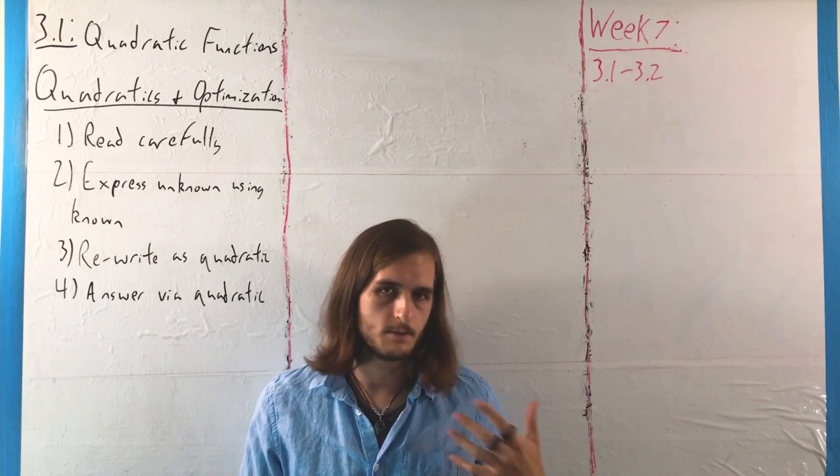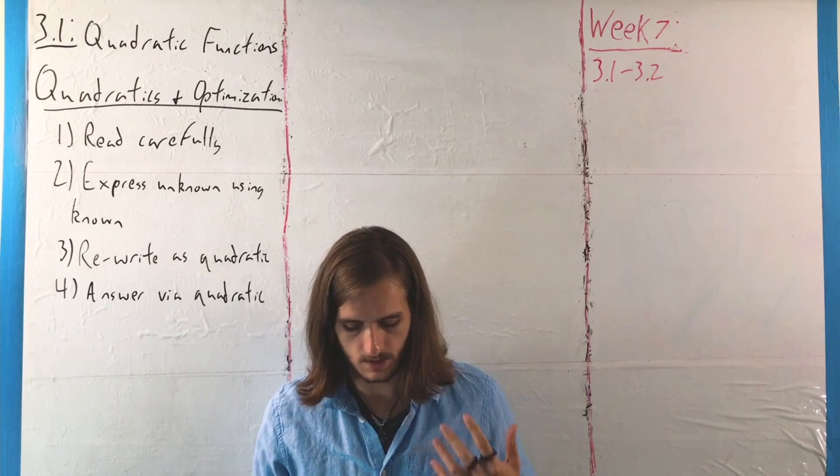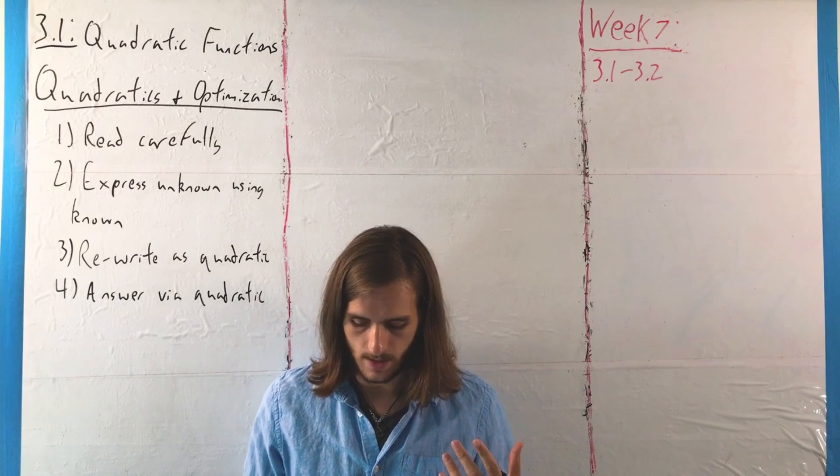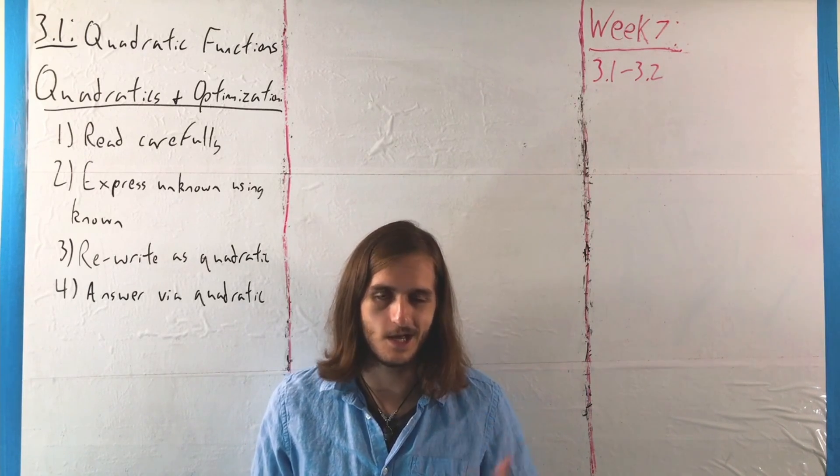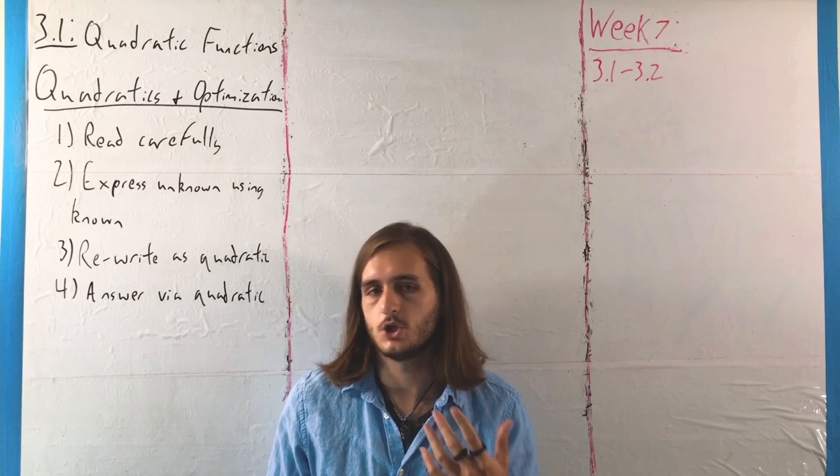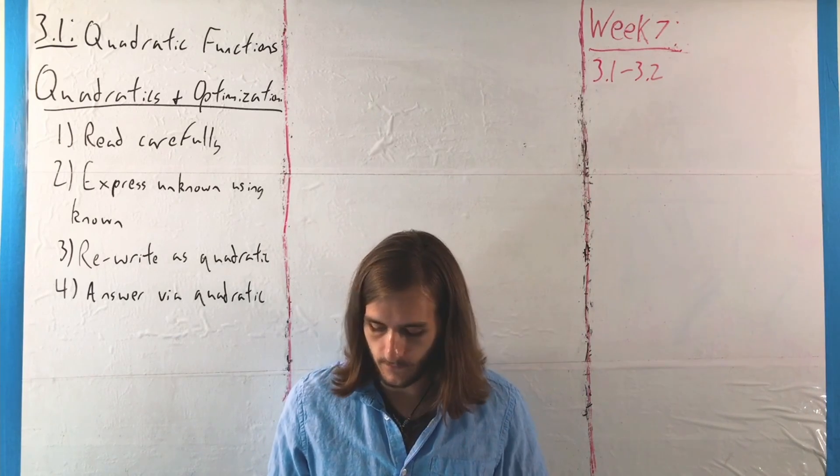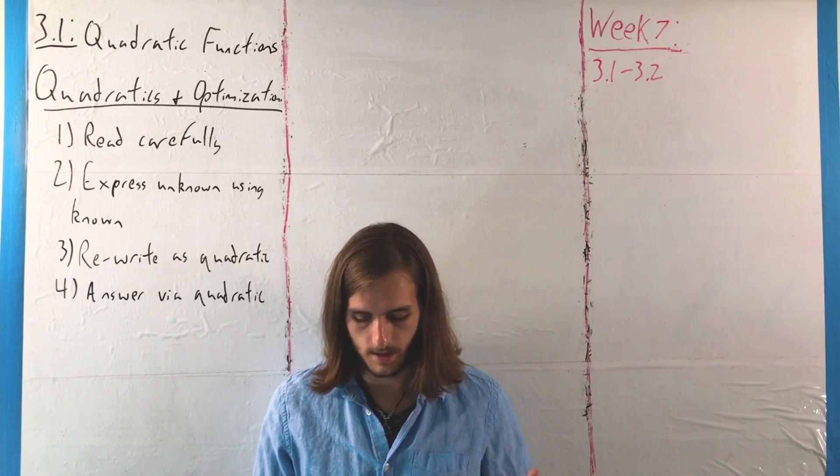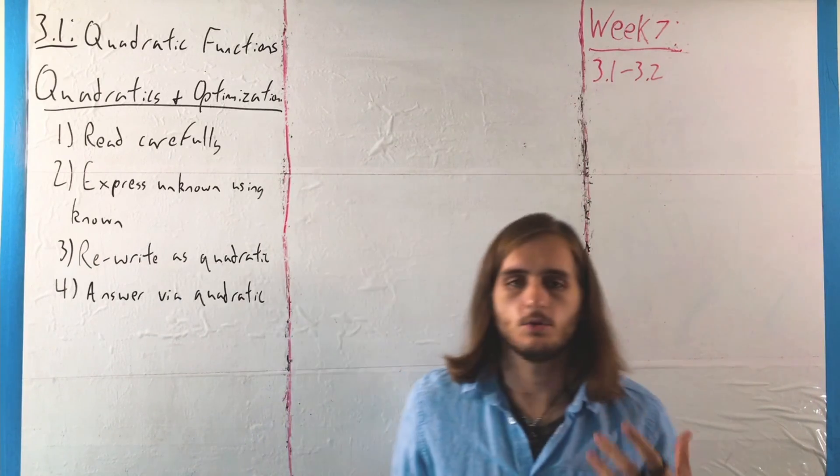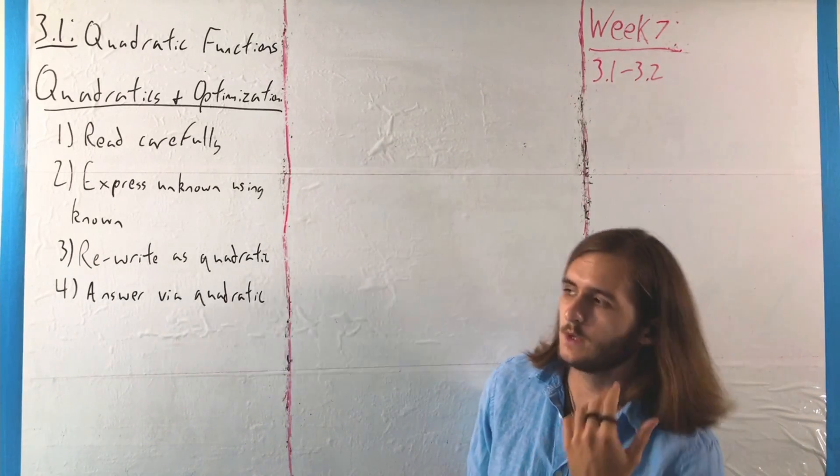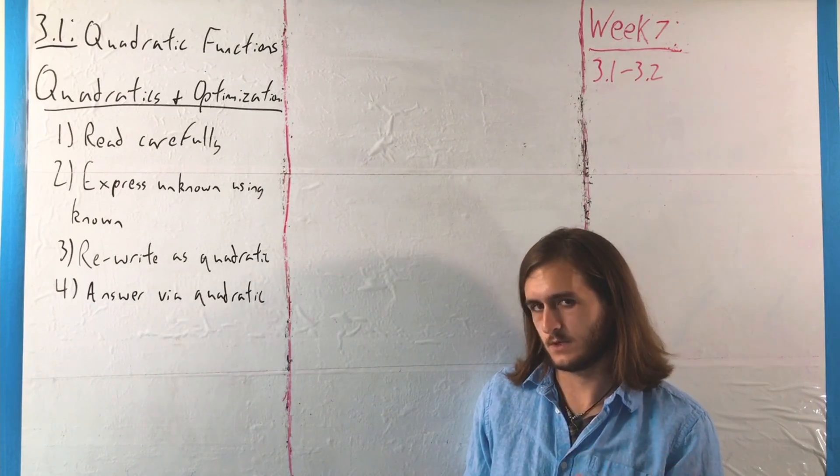From there, you want to be able to put some given information, put some relations, conditions together in such a way that you can express the unknown, the thing you want to find, in terms of what you have. And then with that, you push things into a quadratic form. And once you have a quadratic form, you look for the optimal value of that quadratic, which is at the vertex.